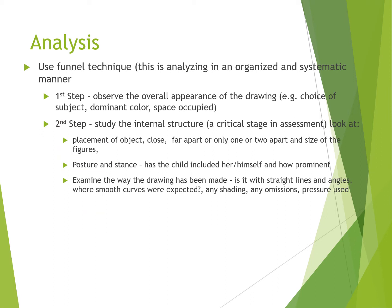After the child has drawn across maybe three sessions — not in one sitting — you can now put all the drawings together and see the relevance. This is what we call analysis. Analysis is like a final technique in the sense that we start from the wider base and narrow down. The first step is to observe the overall appearance of the drawing: What was the choice of color? What was the dominating color? How was the space occupied?